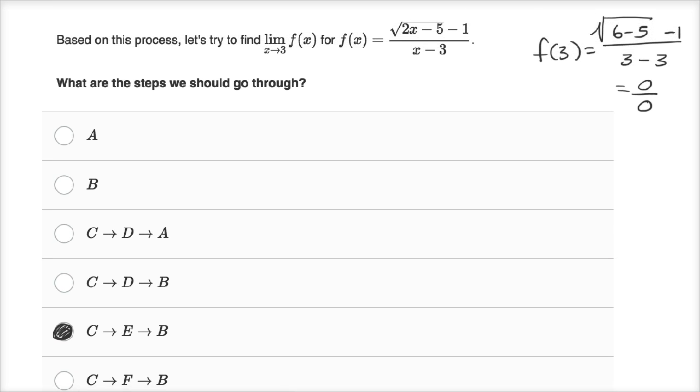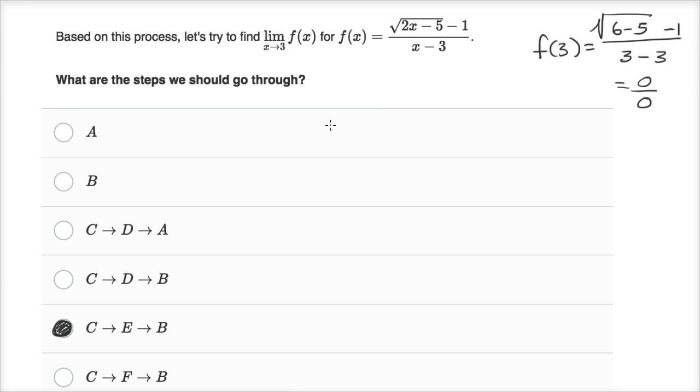So let me multiply this expression times a conjugate. So the square root of two x minus five minus one over x minus three times the square root of two x minus five plus one, it's the conjugate here, over square root of two x minus five plus one.